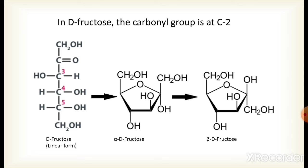Anomers have different physical properties due to their different arrangement of atoms in space — they have different melting points and their specific rotation is different. So these are the different properties of anomers.